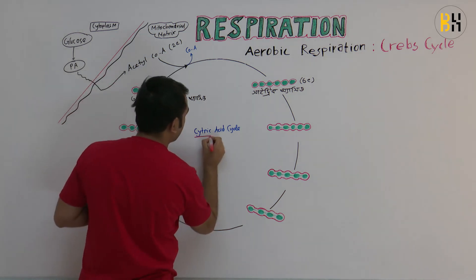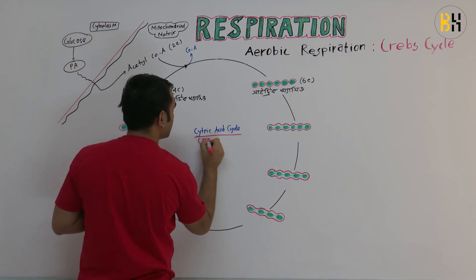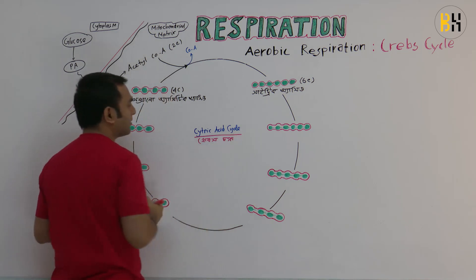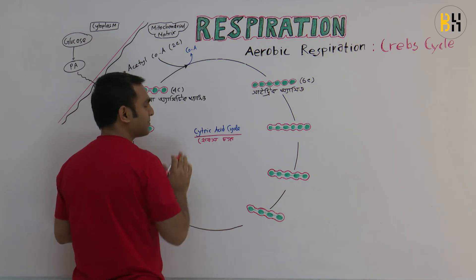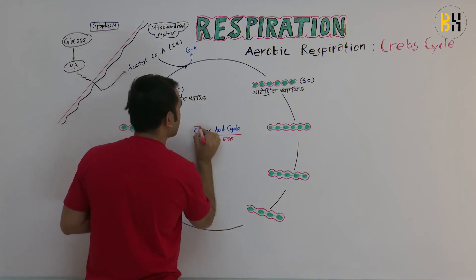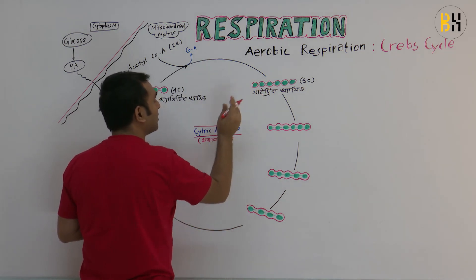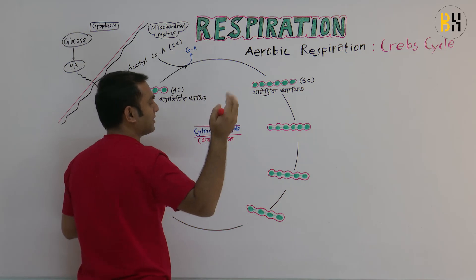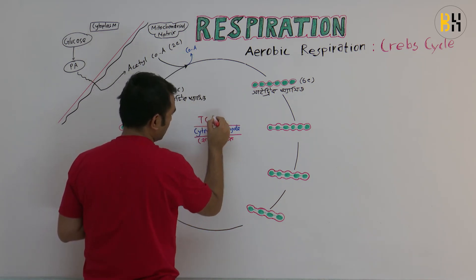This is called the Krebs cycle because Krebs first described it. It is also called the citric acid cycle and the Tricarboxylic Acid cycle — the TCA cycle. So we have three names for the same cycle.